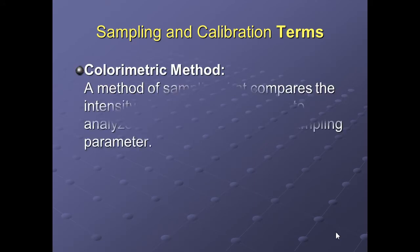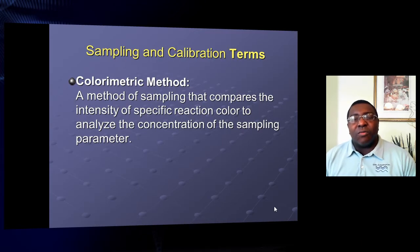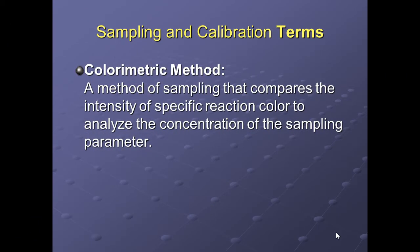The colorimetric method is where you add a reagent to your sample and the reaction gives you a color that tells you what's present. For example, if you're testing for chlorine and your sample turns bright red, you know you have a lot of chlorine. A light tinge of pink means there's hardly any. The color intensity tells you the concentration of whatever you're testing.